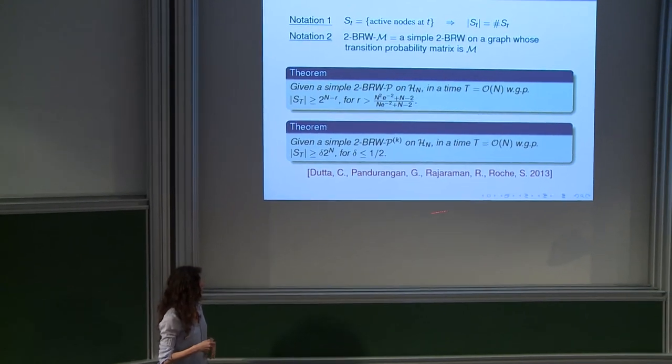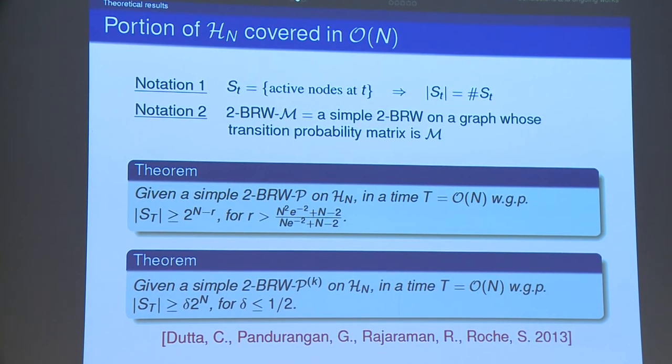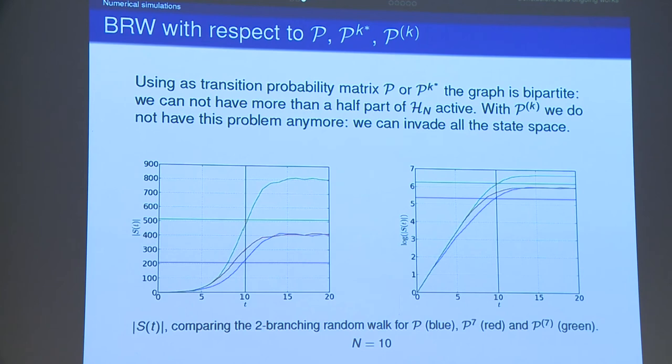So using a process introduced here in this paper to evaluate partial cover times in more general contexts and evaluating the expansion properties of the graph underlying respectively by matrix P and P^k, we were able to obtain these two results for the simple true branching random walk referring to P and P^k respectively. And we observe that while using a simple point mutation model we obtain after order N time steps just a little portion of active nodes in the state space. By using this mutational model almost half of the state space will be activated after a time of the order of N, and independently from k greater than 2 which is really interesting. I conclude the second part with another numerical simulation.